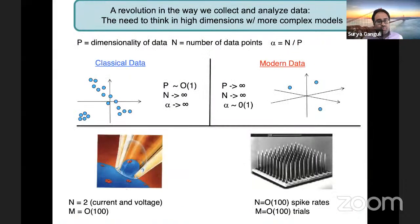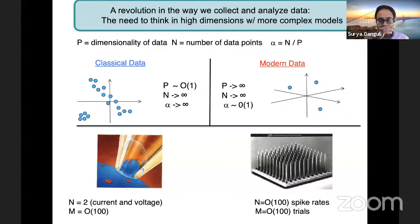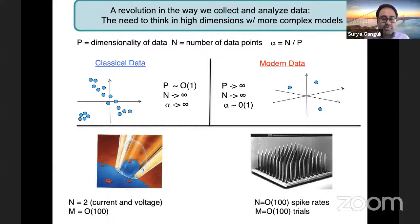We've all felt that there's been a huge revolution in the way that we collect and analyze data, not only in neuroscience but across all fields of human endeavor. We need to really be able to think in high dimensions and more complex models. There's a particular limit — the high-dimensional statistics limit — that's becoming increasingly important and relevant for neuroscience.